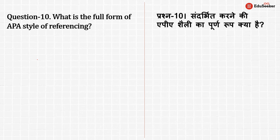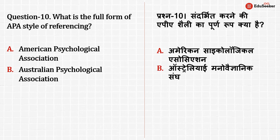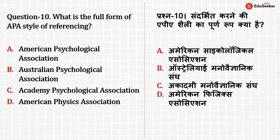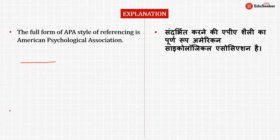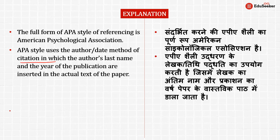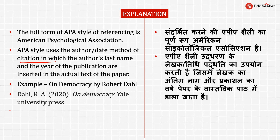The next question is: what is the full form of APA style of referencing? The correct answer is option A — American Psychological Association. This style uses the author-date method of citation, in which the author's last name and the year of publication are inserted in the actual text. For example, a book on democracy by Robert Dahl would be written as: Dahl, R. A., [year], On Democracy (in italics), Yale University Press.